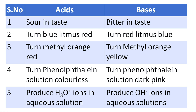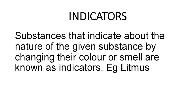We will now discuss how to test whether a given substance is acidic or basic — this is done using indicators. What are indicators? Indicators are those substances which change their color or their smell when they are mixed with acids or bases. Examples include litmus solution, methyl orange, phenolphthalein, hydrangea flower, hibiscus flower, and turmeric. They indicate whether a given substance is an acid or a base.